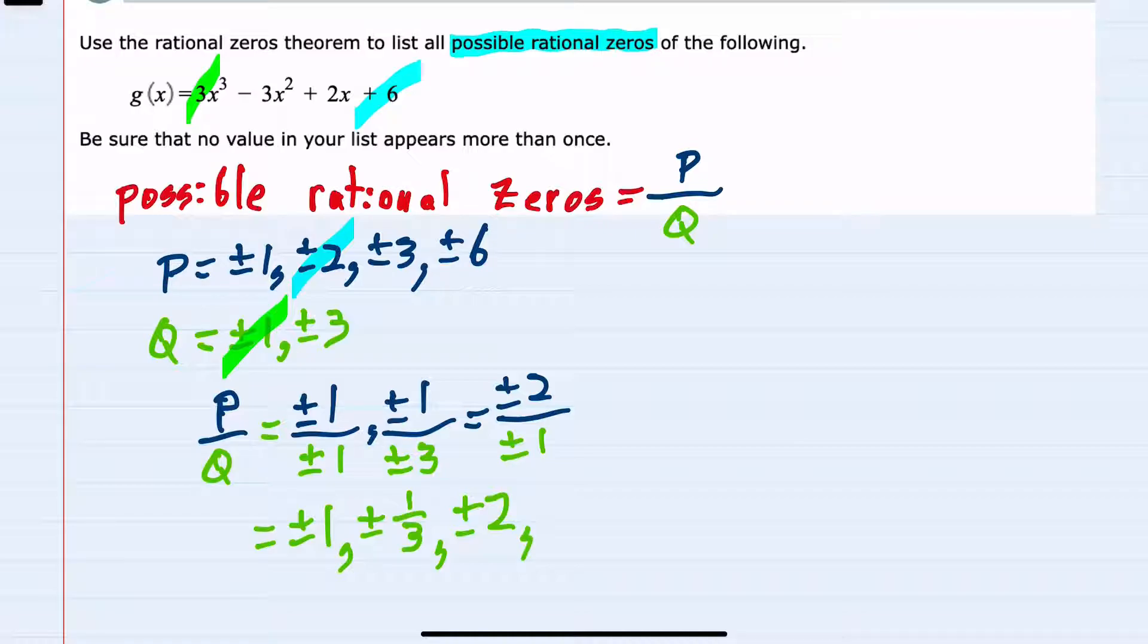Sticking with that same p, we could have the second q value. So a p of plus or minus two and a q of plus or minus three. This fraction would simplify to plus or minus two thirds.